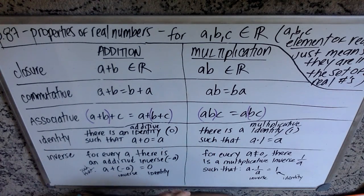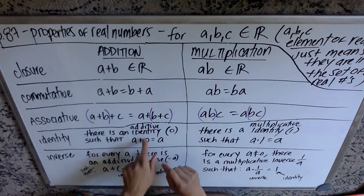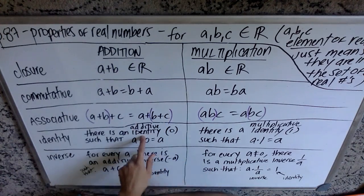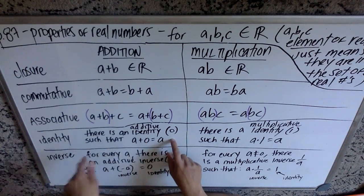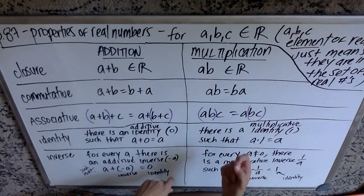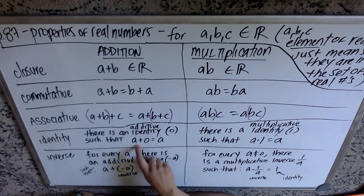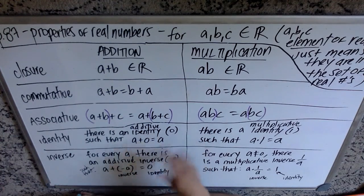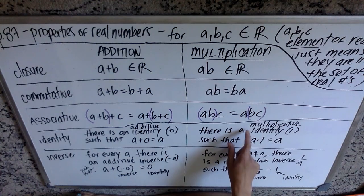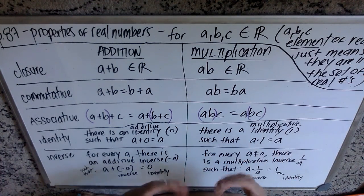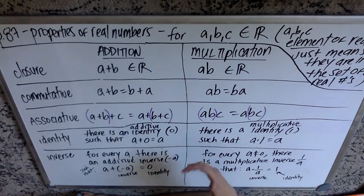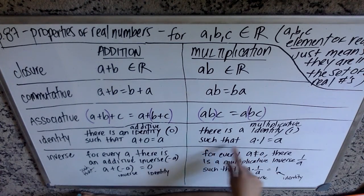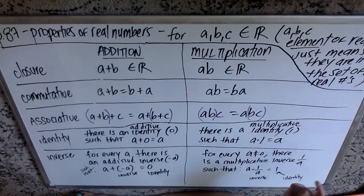The identity property says there is some identity element. This is the additive identity, which is zero: a + 0 = a. What makes it the identity element is it doesn't change the identity of the answer — you started with a, you ended with a; adding zero did nothing. There's also a multiplicative identity — that's the adjective form of multiplication. The multiplicative identity is the thing you can multiply by that changes nothing, and that number is one: a × 1 = a.